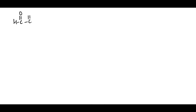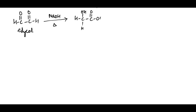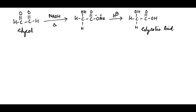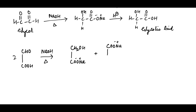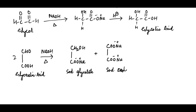Likewise, glyoxal, a dialdehyde, in the presence of sodium hydroxide undergoes intramolecular oxidation-reduction to form the sodium salt of glycolic acid. Under acidic conditions, this gives glycolic acid. Similarly, two molecules of glyoxylic acid under basic conditions undergo the Cannizzaro reaction: one molecule is reduced to form sodium glycolate, and the other is oxidized to form sodium oxalate.